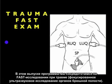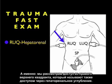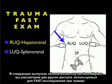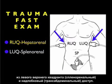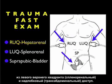In this module, we're going to focus entirely on the trauma fast exam. Specifically, we're going to look further into the right upper quadrant view, also known as the hepatorenal view. We're going to cover the two other views of the trauma fast exam in upcoming modules: the left upper quadrant view, also known as the splenorenal or perisplenic view, and the suprapubic view, also known as the bladder view.